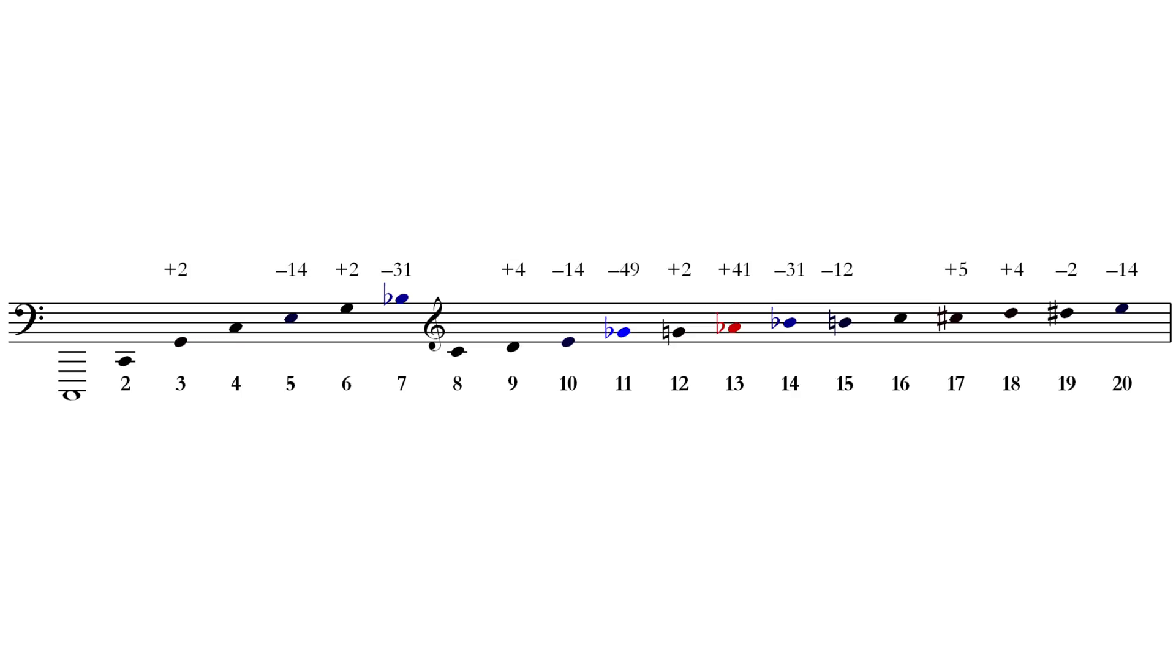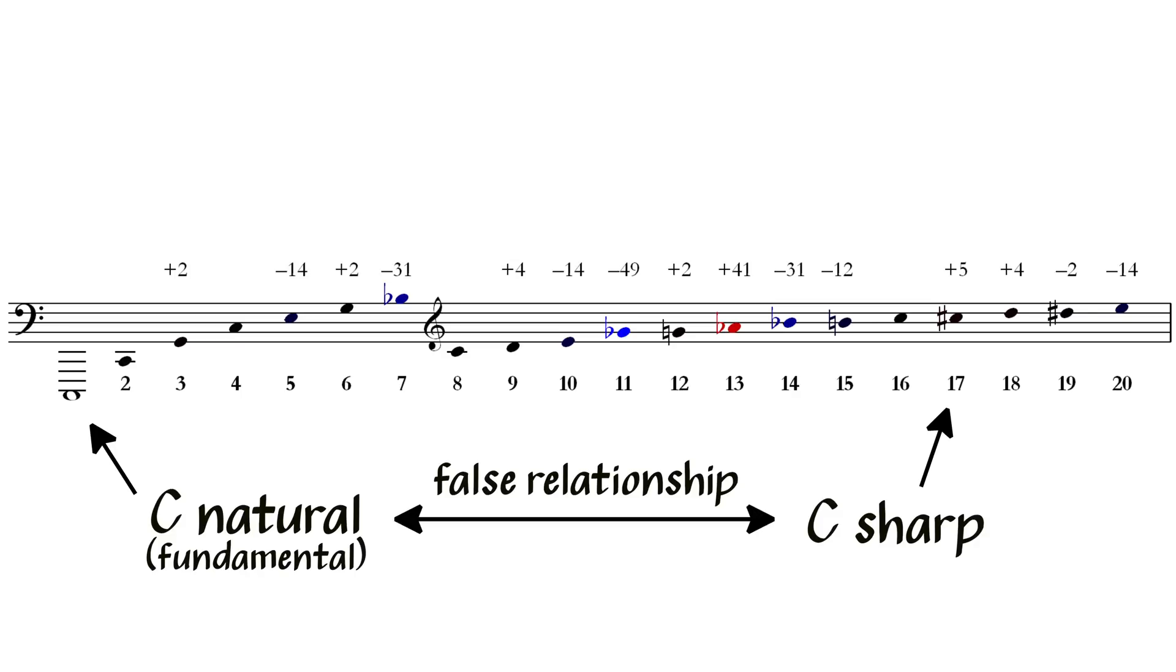There is kind of a natural order in the harmonic series that you can use to give your chords more clarity. There are some weird things, though, about this natural order. For example, on the harmonic series of C, you'll actually find a C-sharp on the 17th harmonic. There is a false relationship built into the natural order of things. Kind of crazy.